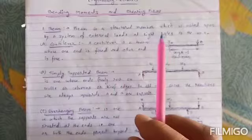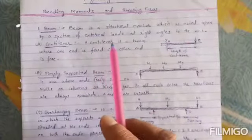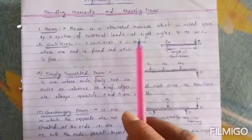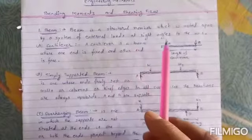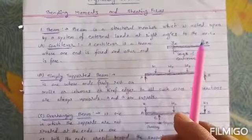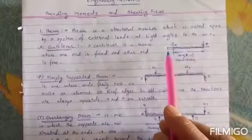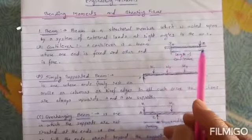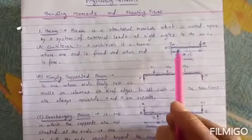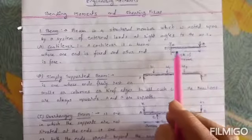The beam is a structural member which is acted upon by a system of external loads at right angles to the axis. This is the beam and this is the axis.